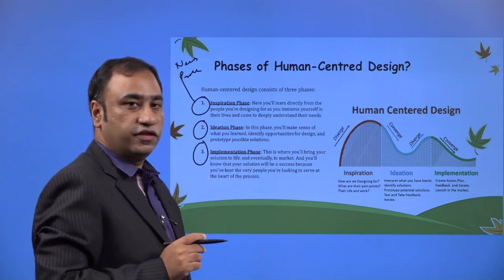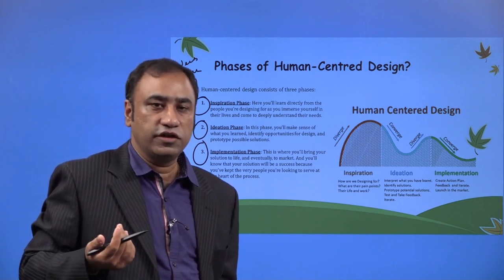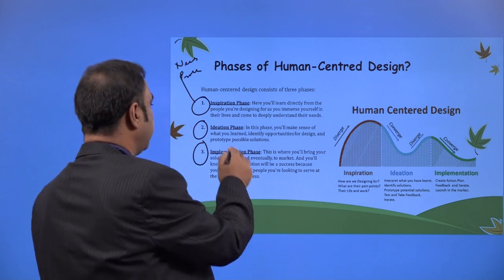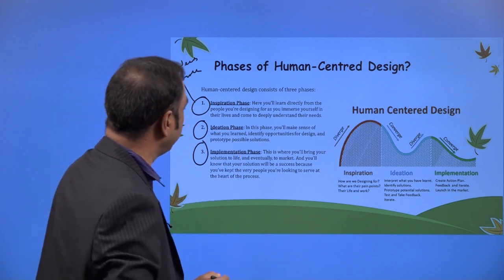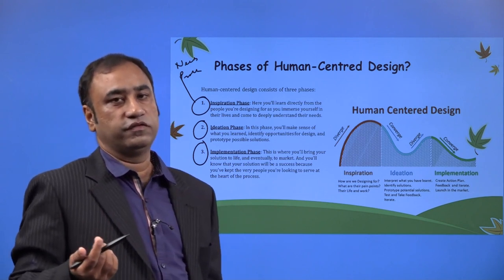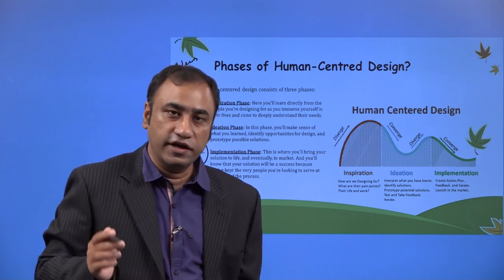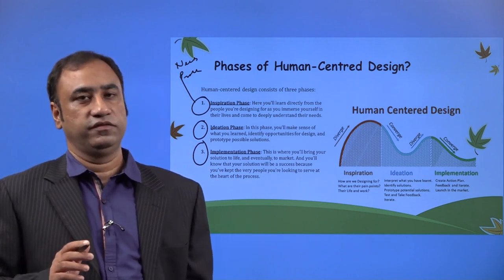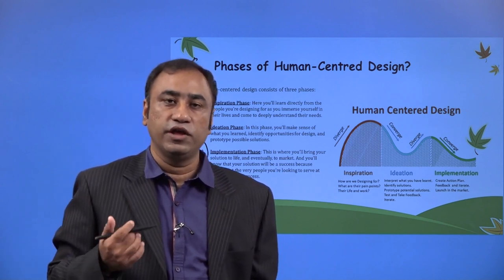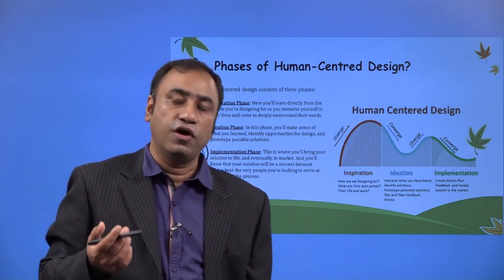Once you understand the needs, you start working on them — questioning people: Why do you need this? What do you need in this particular product? You start inquiring. Then the Ideation phase comes. In this phase, you make sense of what you learned, identify opportunities for design, and prototype possible solutions. Once you learn from people what their need is, you identify an opportunity and start working on ideation and prototyping.